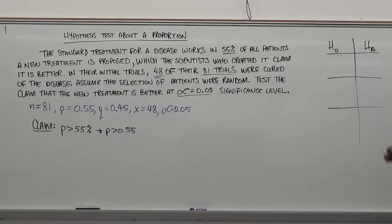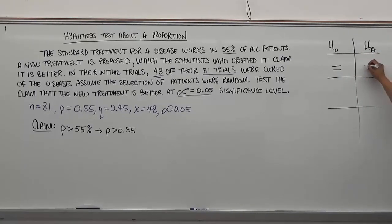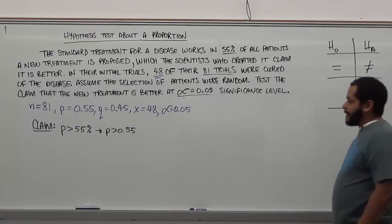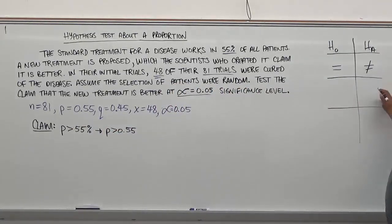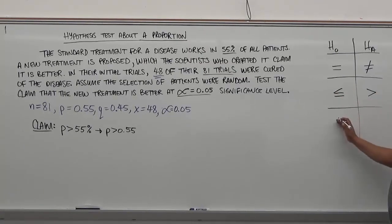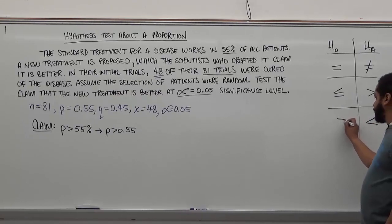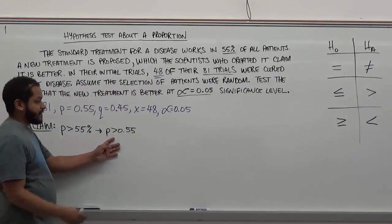There are three possibilities when developing null and alternative hypotheses from a claim. If a claim has equality, it becomes the null hypothesis, while inequalities become alternative hypotheses. If a claim has a greater than symbol, that inequality becomes the alternative hypothesis, and its counterargument — less than or equal to — becomes the null. In our case, we have a claim with a greater than symbol, so this represents an alternative hypothesis.